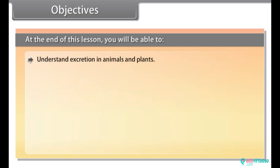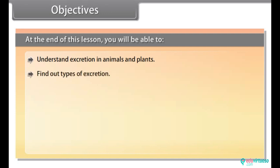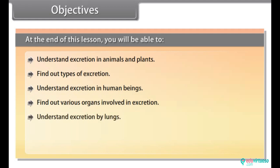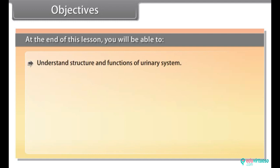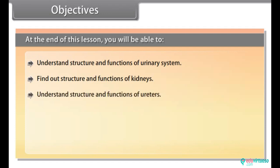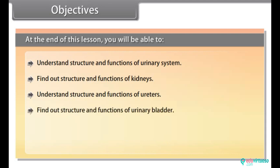At the end of this lesson, you will be able to: understand excretion in animals and plants; find out types of excretion; understand excretion in human beings; find out various organs involved in excretion; understand excretion by lungs, skin, and large intestine; understand the structure and functions of the urinary system, kidneys, ureters, urinary bladder, and nephrons.